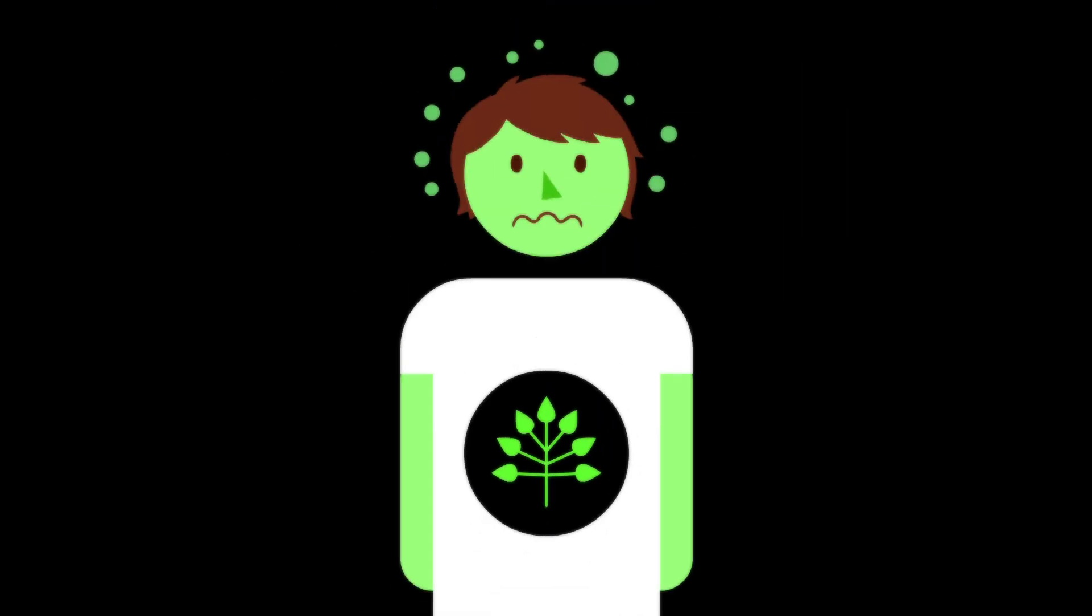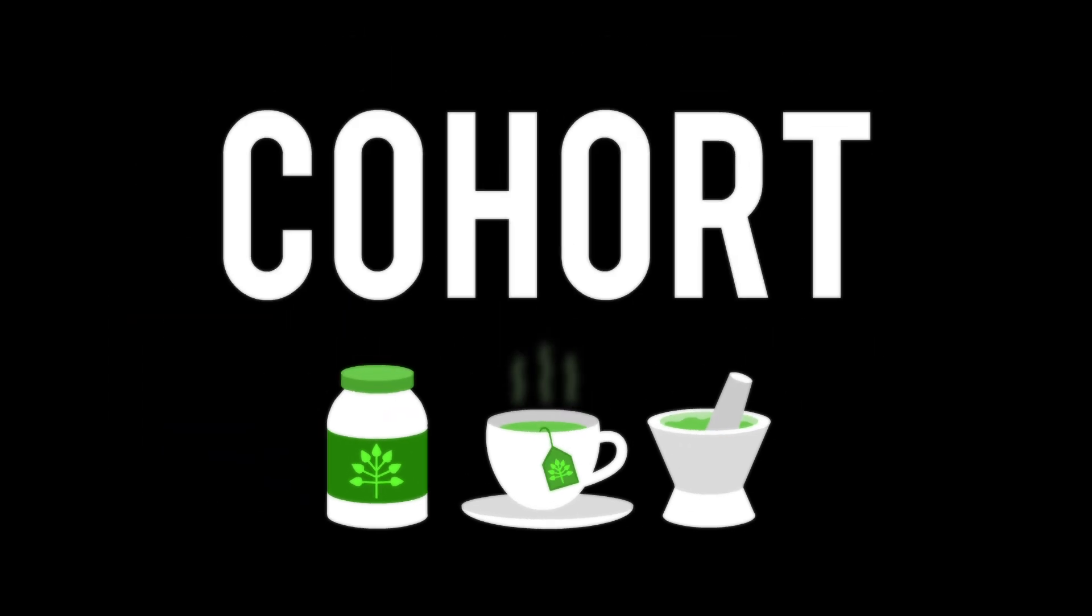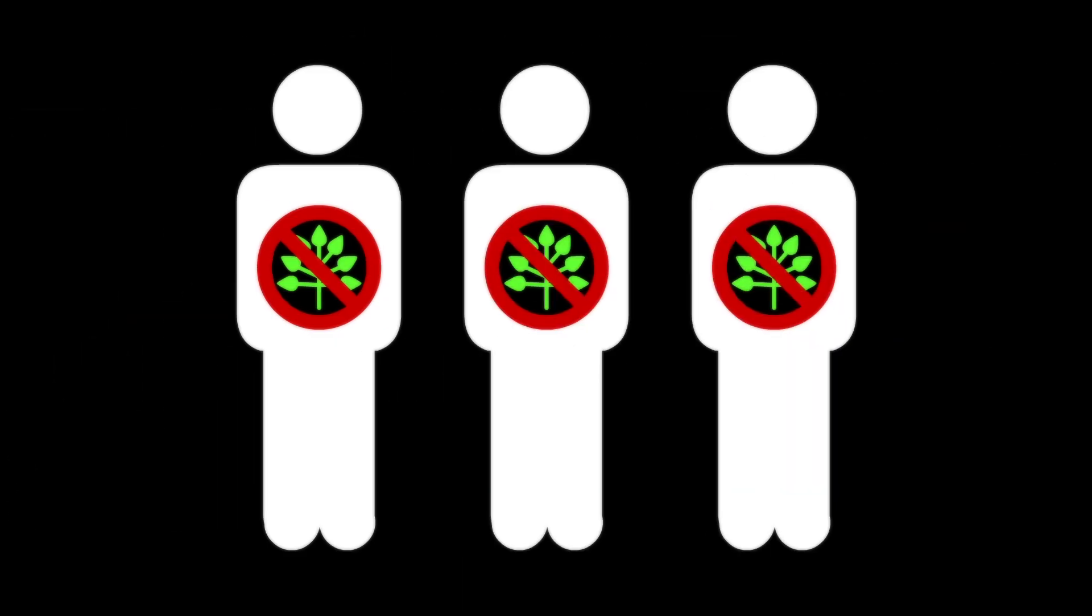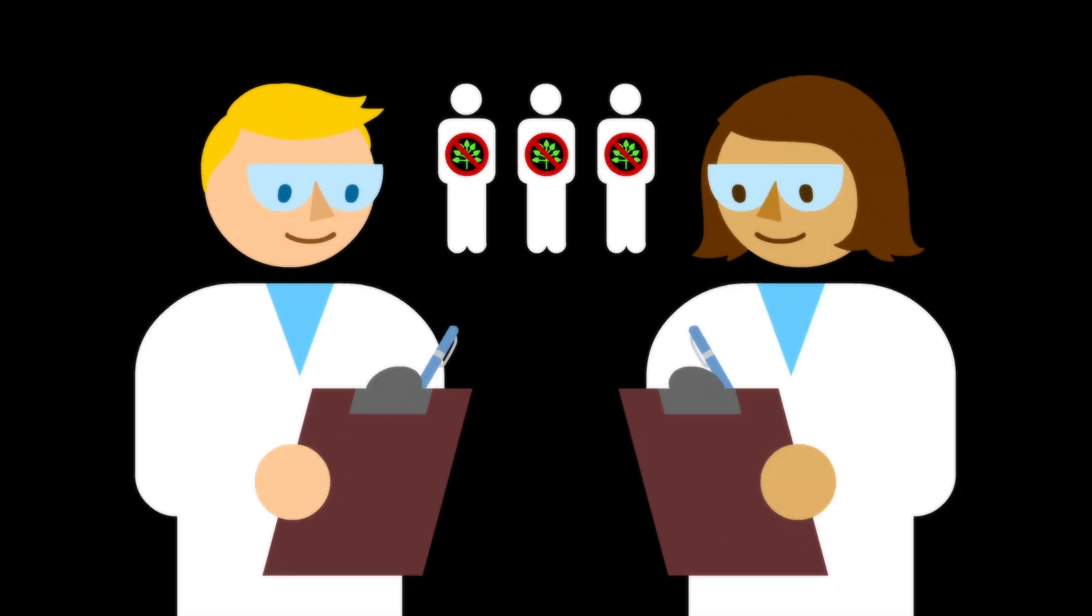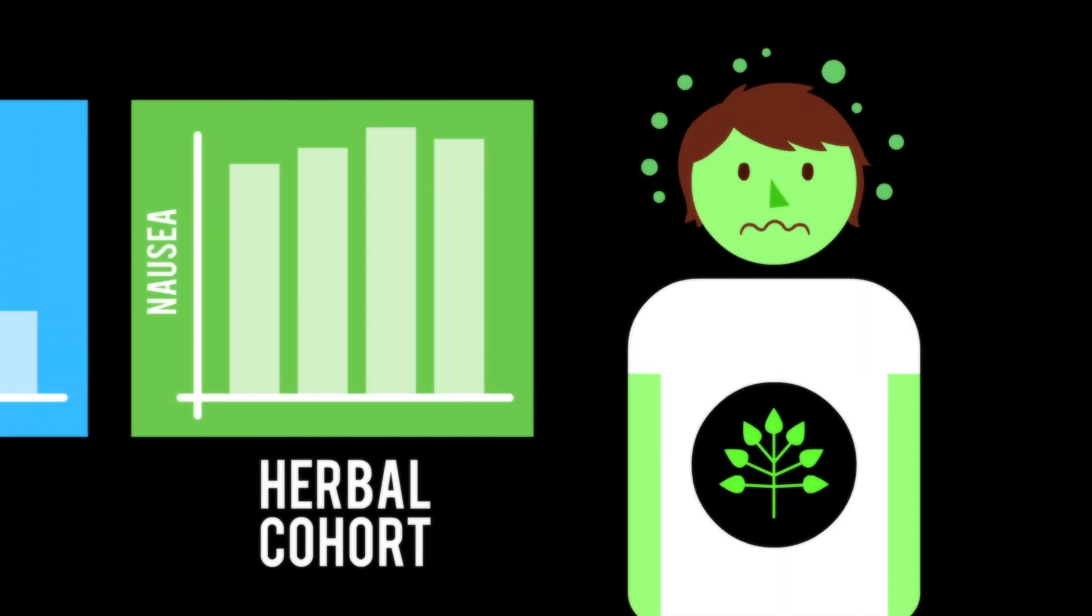Let's say we wanted to study whether an herbal ingredient on the market causes nausea. Rather than deliberately giving people something that might make them nauseated, we would find those who already take the ingredient in their everyday lives. This group is called the cohort. We would also need a comparison group of people who do not have exposure to the ingredient, and we would then compare statistics. If the rate of nausea is higher in the herbal cohort, it suggests an association between the herbal supplement and nausea.